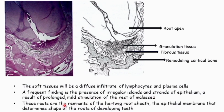Rests of Malassez are the remnants of the Hertwig's epithelial root sheath. These are the epithelial membranes that will be determining the shape of the roots of developing teeth.